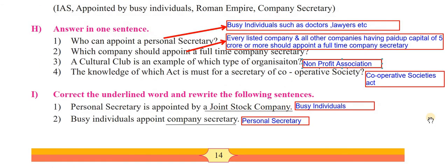Now the I part - correct the underlined word and rewrite the following sentences. Students, wherever you are asked to rewrite, you have to write the entire thing and whichever word or term has been underlined, you remove it and fix the correct answer there. First one: personal secretary is appointed by a joint stock company - which is wrong. The correct answer is busy individuals. You have to rewrite the entire statement: personal secretary is appointed by busy individuals.